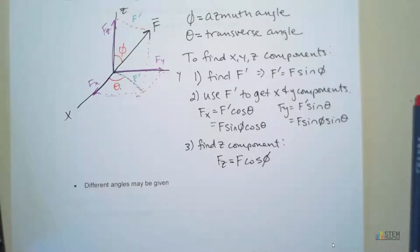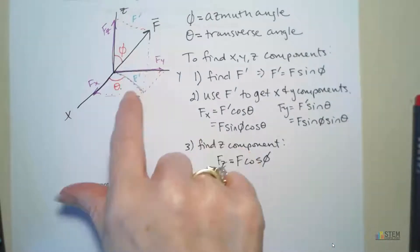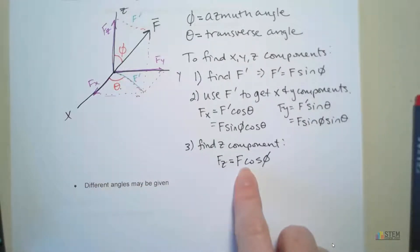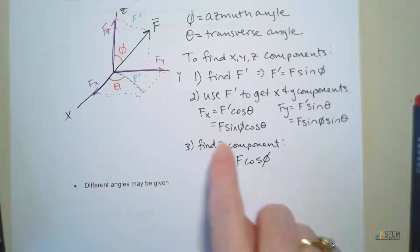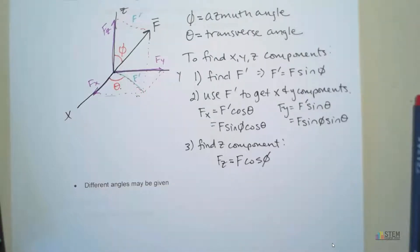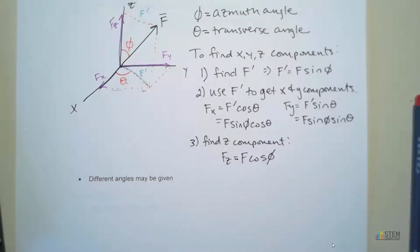That's how you go about using the azimuth and transverse angles to get your force components. A lot of students have a hard time with this, and the main thing is this plane down here. You can usually get the Z component because that's not too different from what we've been doing, but it's this XY plane that tends to be the hardest to see. So let's do another set with different angles to give you another perspective.